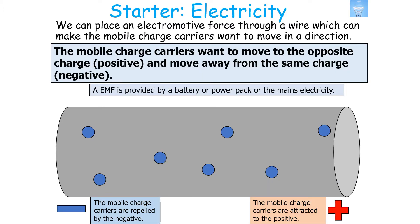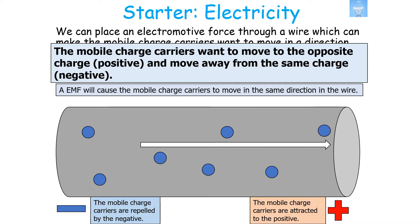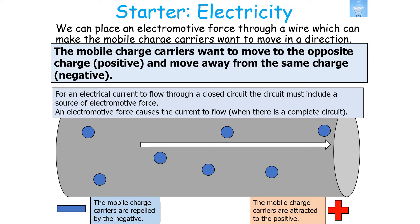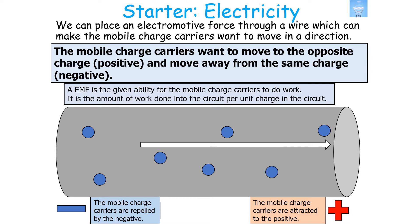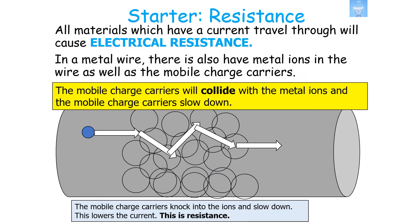We can place an electromotive force through the wire which makes the mobile charge carriers want to move in a certain direction. The mobile charge carriers will move towards the opposite charge that they possess — in this case, positive — and move away from the same charge, the negative. An EMF is provided by a battery, power pack, or mains electricity across the conductor, causing the mobile charge carriers to move in the same direction in the wire. An EMF will cause current to flow when there's a complete circuit; it is the work done per unit charge into the circuit.